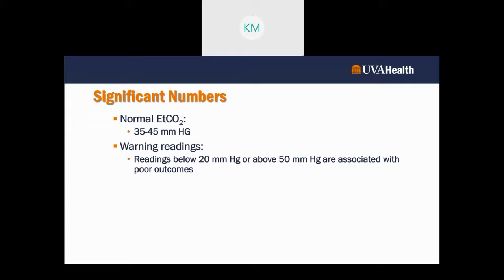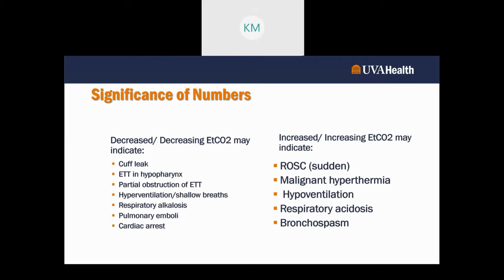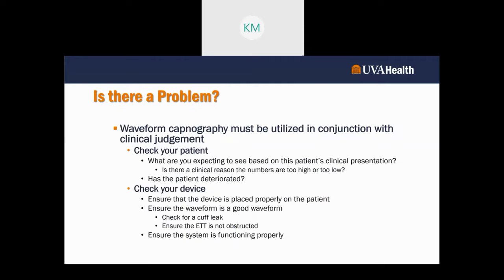If you see someone outside normal ranges, assess your patient. Warning readings are below 20 or above 50, as they are associated with poor outcomes. Decreased or decreasing end-tidal CO2 may indicate hyperventilation, shallow breaths, pulmonary emboli, or cardiac arrest. Increased or increasing end-tidal CO2 may indicate respiratory acidosis, bronchospasm, or ROSC.